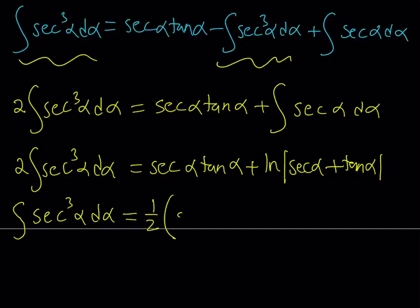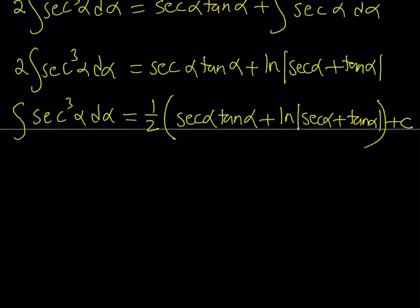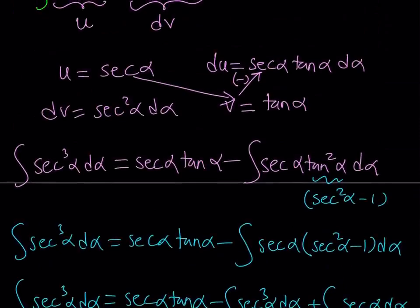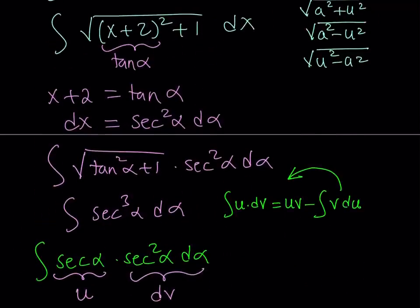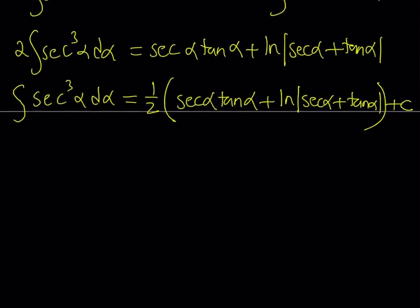Dividing by two gives us one half times the quantity: secant alpha tangent alpha plus ln of the absolute value of secant alpha plus tangent alpha, plus the constant C. This is the answer in terms of alpha, but we need to back-substitute. We know that tangent alpha equals x plus 2, so let's find secant alpha.